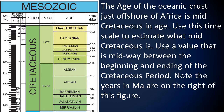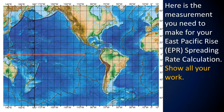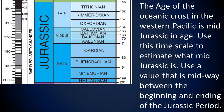The age of the oceanic crust just offshore of Africa is mid-Cretaceous in age. Use this time scale to estimate what mid-Cretaceous is — use a value midway between the beginning and ending of the Cretaceous period. The Cretaceous period begins at 145 million years ago and ends at about 66 million years ago. Here is the measurement you need to make for the East Pacific Rise Spreading Rate calculation. The age of the oceanic crust in the Western Pacific is mid-Jurassic in age; the Jurassic period begins at 201 million years ago and ends at 145 million years ago.